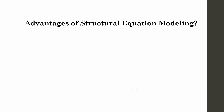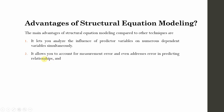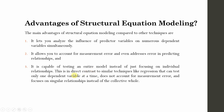The main advantages of SEM are that it lets you analyze the influence of predictor variables on numerous dependent variables simultaneously — there is no restriction to one dependent variable. It allows you to account for measurement error and address errors in predicting relationships. It is capable of testing an entire model instead of focusing on individual relationships, in direct contrast to techniques like regression in SPSS, which can test only one dependent variable at a time, does not account for measurement error, and focuses on singular relationships instead of the collective whole.